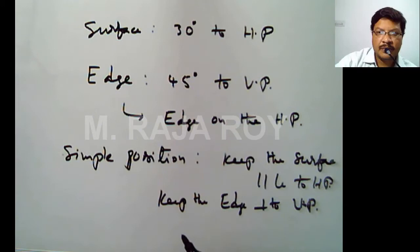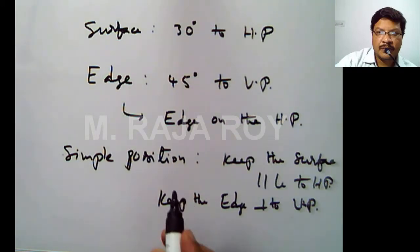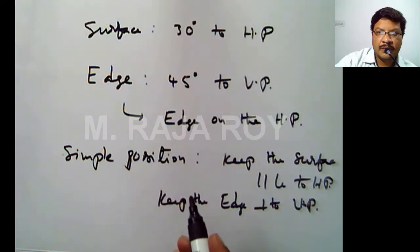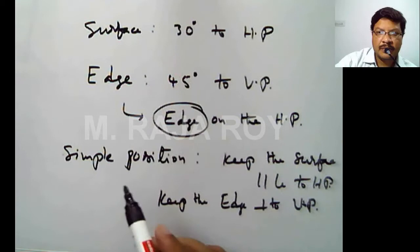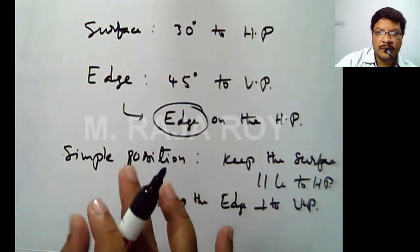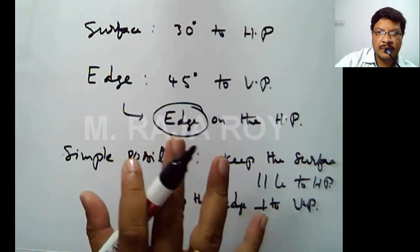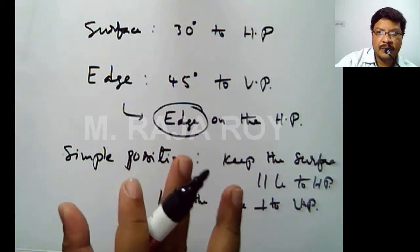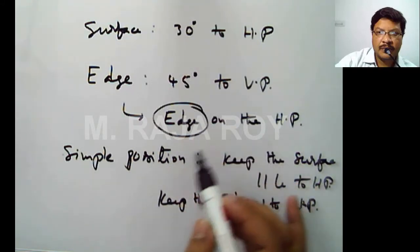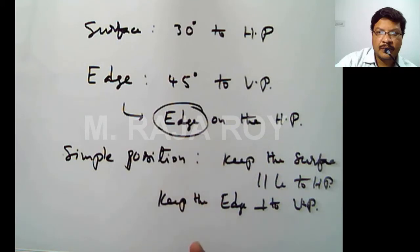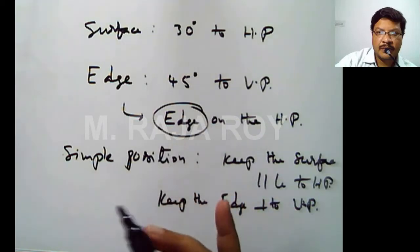In the simple position, if the surface is inclined to HP you keep the surface parallel to HP, and when the edge is inclined to VP you keep the edge perpendicular to VP. Since the edge is on the HP and you are keeping one edge on the HP with the entire surface parallel to HP, automatically the entire surface lies on the horizontal plane. So your top view will be some distance in front of the VP, and the front view lies on the XY line.